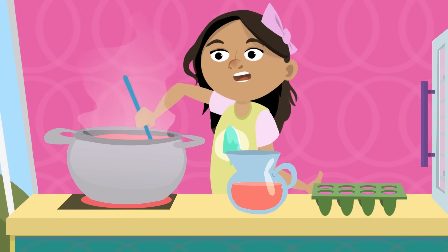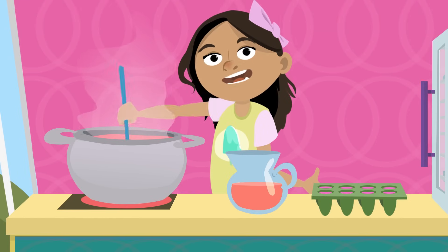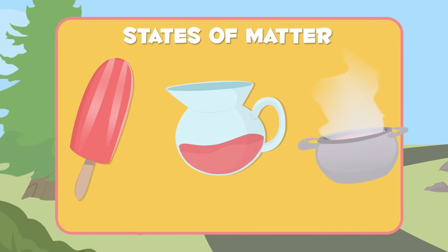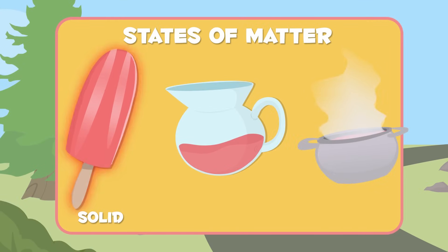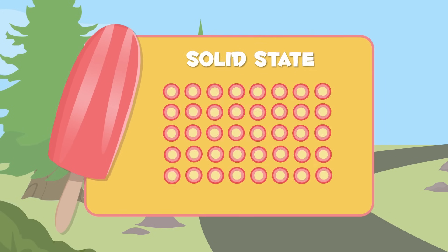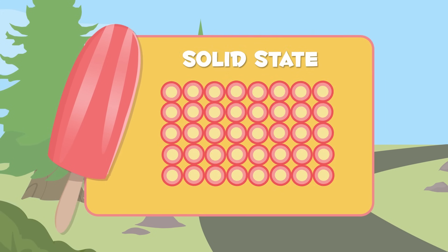Did you get the idea? Let's recap a little. Matter exists in three states: solid, liquid, and gas. Solid matter has a definite shape and volume. Particles are well organized and held closely together.